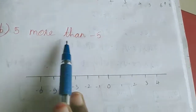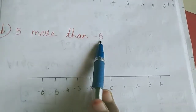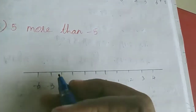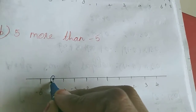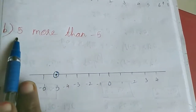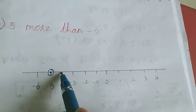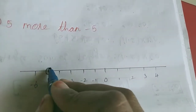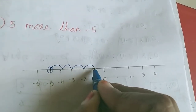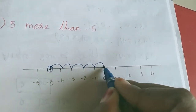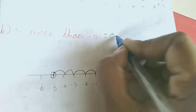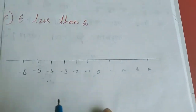Sum B: 5 more than minus 5. We will point out the second number — the second number is minus 5, so on the number line we mark minus 5. More than means we want to move to the right side — how many steps? 5 steps. So: 1, 2, 3, 4, 5. I moved 5 steps, so the answer is 0.